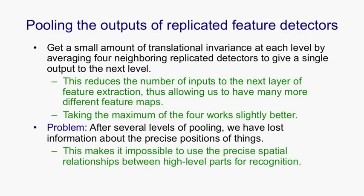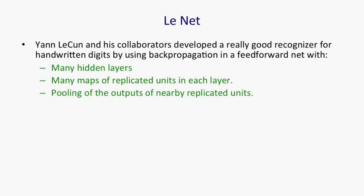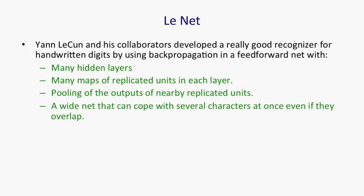The first impressive example of a convolutional neural net was done by Yann LeCun and his collaborators, who developed a really good recognizer for handwritten digits. Their net had many hidden layers. In each layer it had many maps of replicated units. And it had pooling between layers. So you pool adjacent replicated units before you send them to the next layer. They also used a wide net that could cope with several characters at once. And that would work even if the characters overlapped. So you didn't have to segment out individual characters before you fed them to their net.